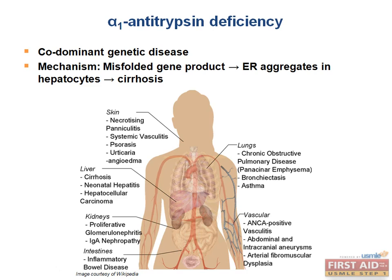Alpha-1 antitrypsin deficiency is a codominant genetic disease. It results in a misfolded gene product protein that accumulates in the endoplasmic reticulum of hepatocytes. Because the enzyme cannot leave hepatocytes to travel to its usual site of protective action in the lungs, panacinar emphysema develops. Liver biopsy will show PAS-positive diastase-resistant globules.